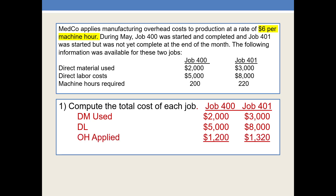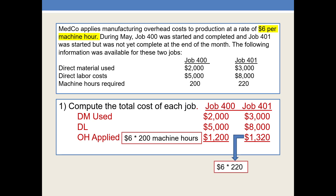Overhead, of course, has to be allocated to the jobs. You can see I've put the amounts in here, but it is applied at a rate of $6 per machine hour. So to get Job 400's calculation, we'll take $6 times 200 hours. For Job 401, we'll take $6 times 220 hours. So the overhead rate is used for both of the jobs, and in fact it will be used for all of the jobs created during the period.